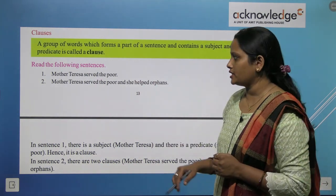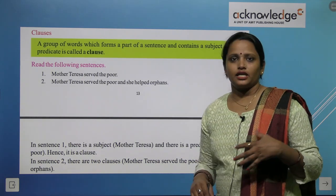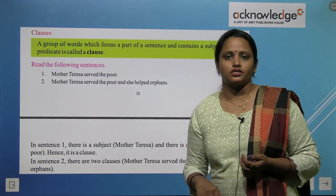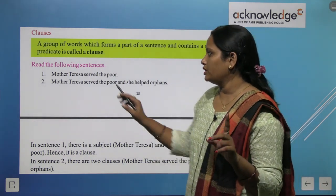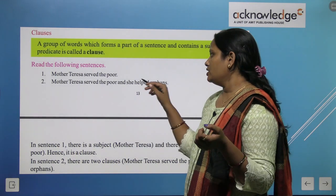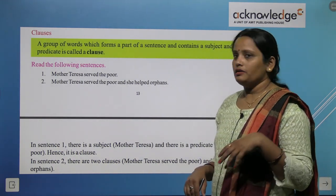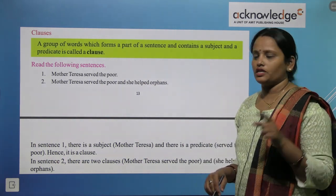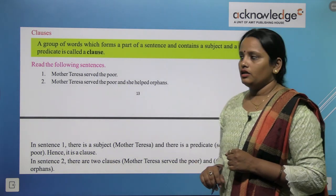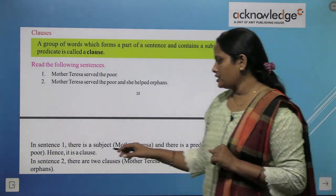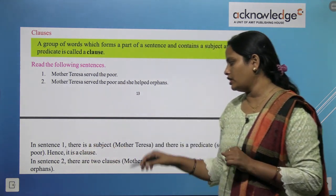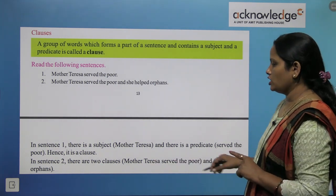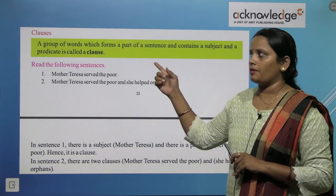Read the following sentences: 'Mother Teresa served the poor.' Now the same sentence is written again combined: 'Mother Teresa served the poor and she helped orphans.' Here two sentences have been joined. In sentence one there is a subject — Mother Teresa — and a predicate — 'served the poor' — hence it is a clause. In sentence two there are two clauses: 'Mother Teresa served the poor' is the first, and 'she helped orphans' is the second.